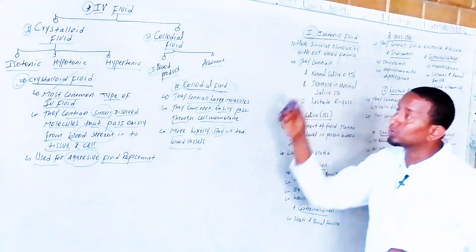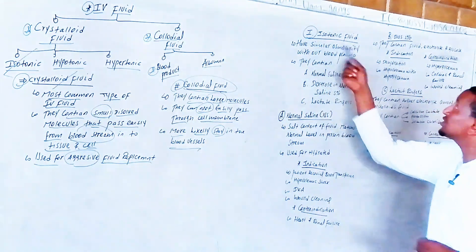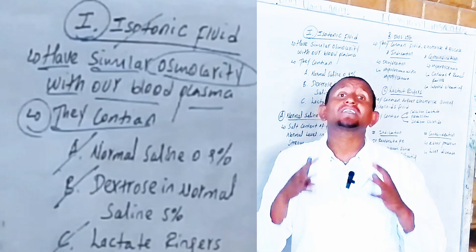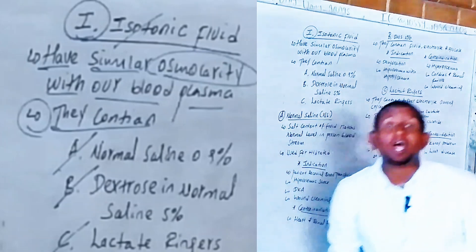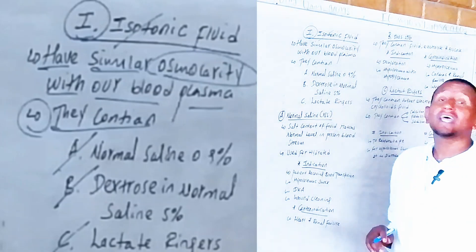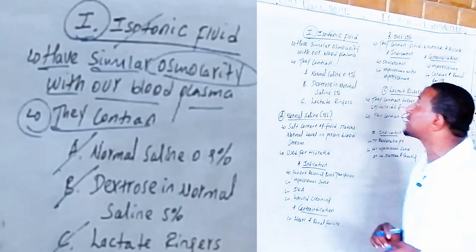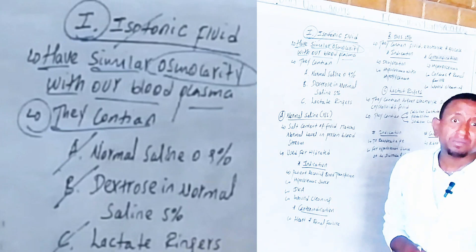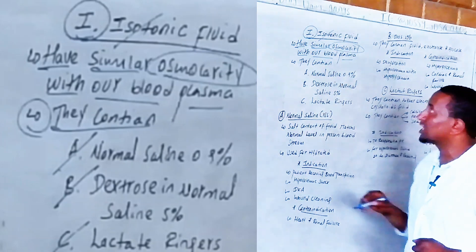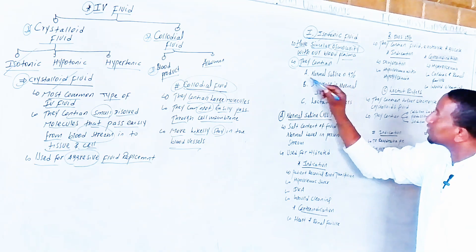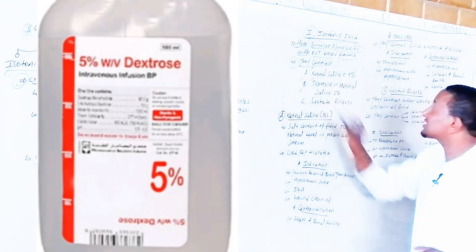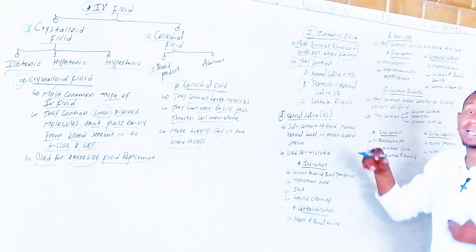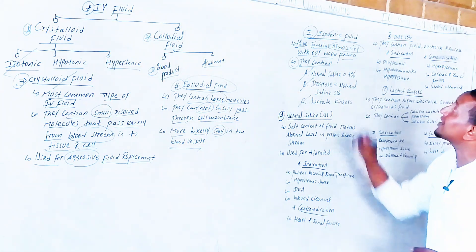For crystalloid fluid, the first type is isotonic fluid. 'Iso' is a Latin word meaning a similar osmolarity to our blood plasma. Isotonic fluid contains three important fluids: normal saline 0.9%, dextrose in normal saline 5%, and Ringer's lactate.